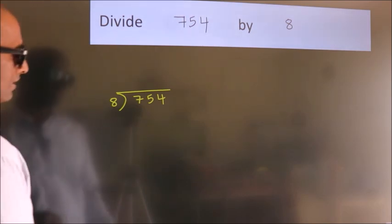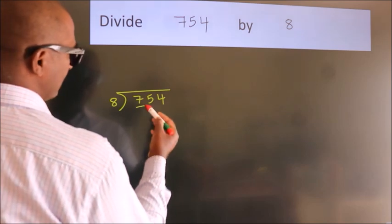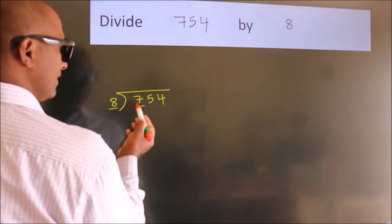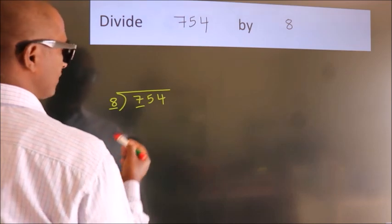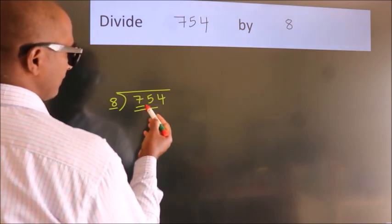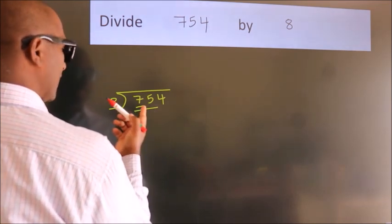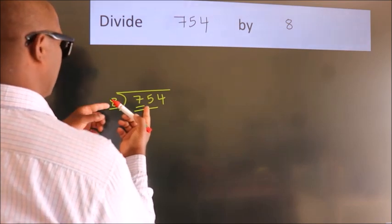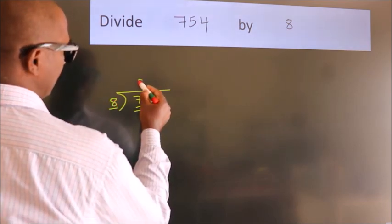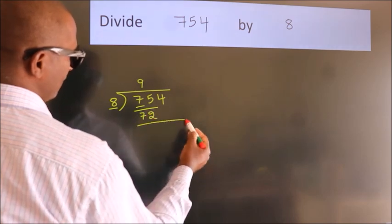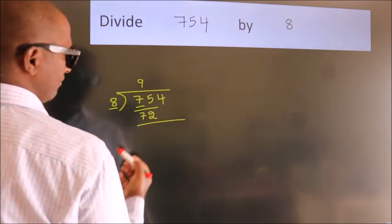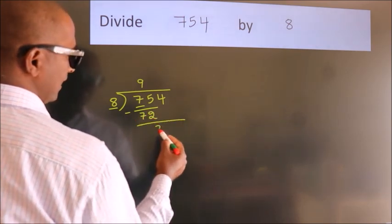Next, here we have 7, here 8. 7 smaller than 8. So we should take 2 numbers. 75. A number close to 75 in 8 table is 8 nines 72. Now, we should subtract. We get 3.